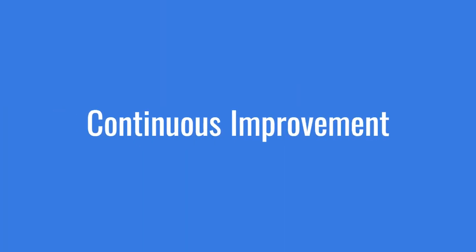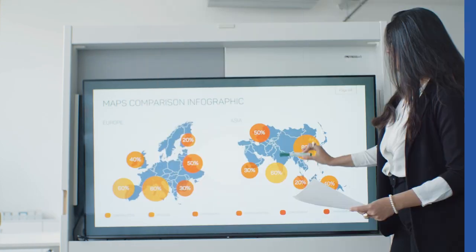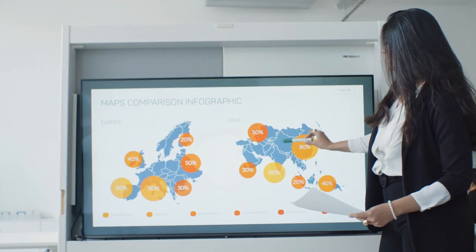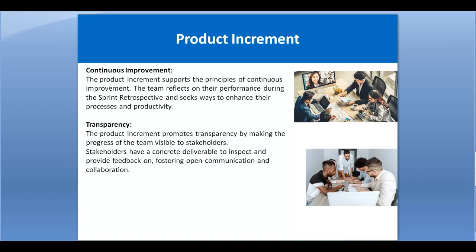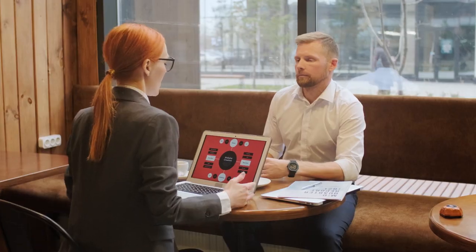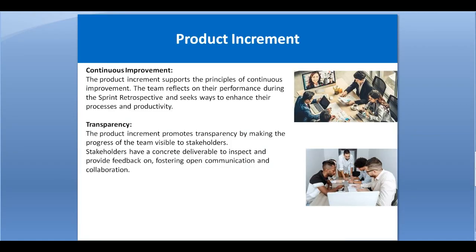Continuous improvement means the product increment supports the principles of continuous improvement. The team receives feedback and improves their performance. During the sprint retrospective, they identify things that should not be continued and positive things that should be continued, supporting the continuous improvement process.